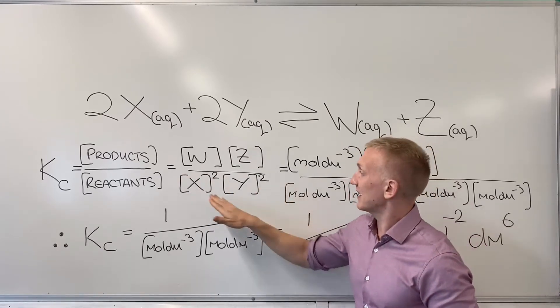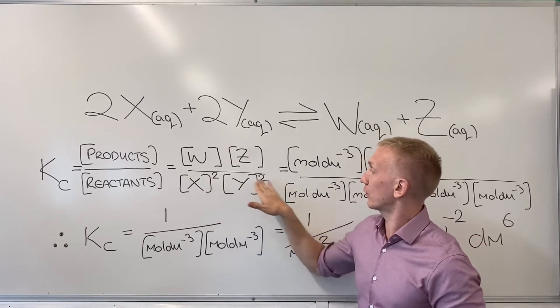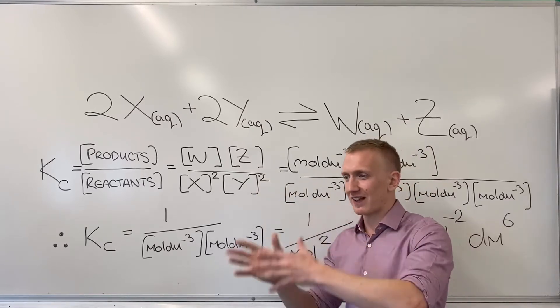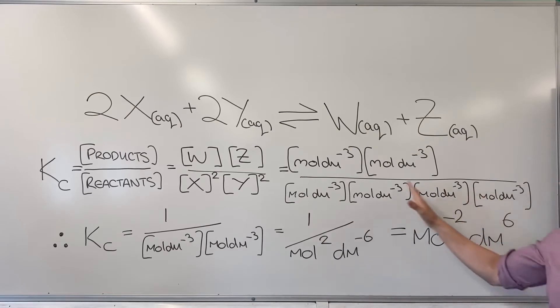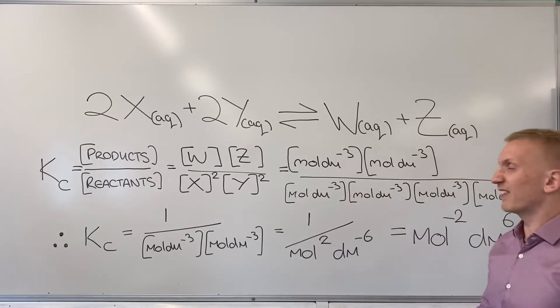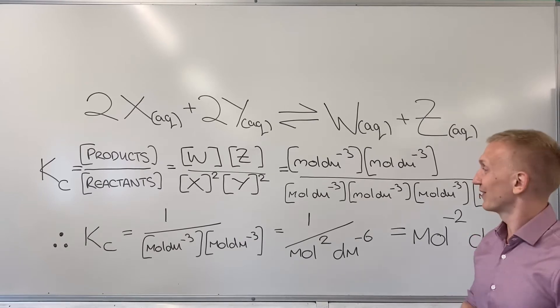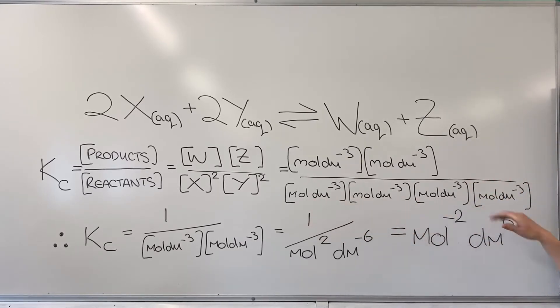Underneath here though you can see I've got some concentration terms squared. Remember that just means itself times itself. So I've expanded that a little and shown here four separate concentration sets of units along the bottom just here. So I've got moles per decimetre cubed four times all the way across.